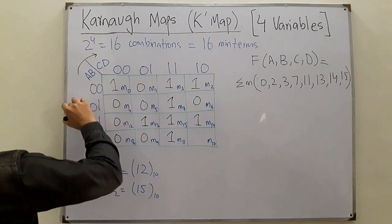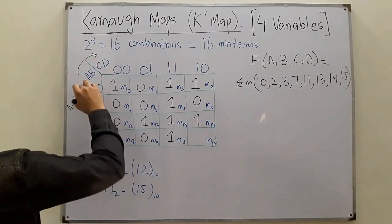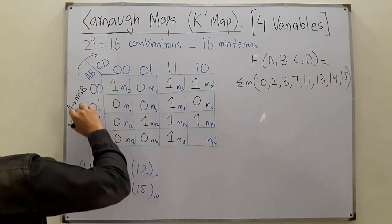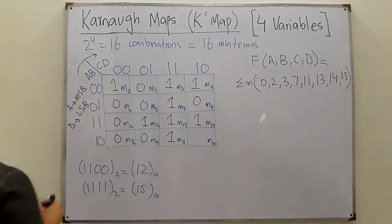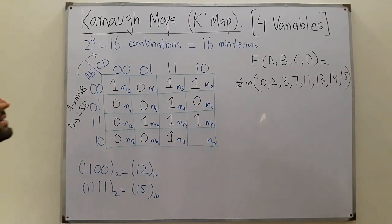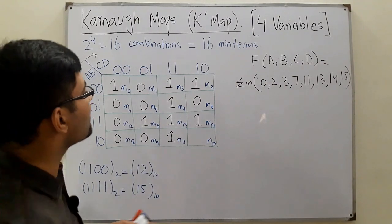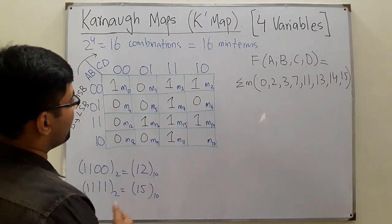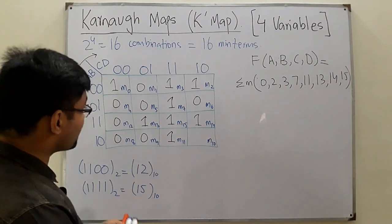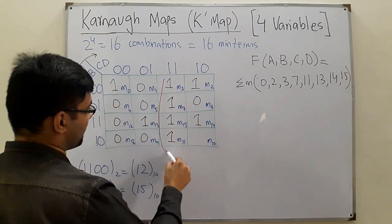Note: A is the most significant bit and D is the least significant bit. Now look for the largest possible groups. You can have a maximum of 16 ones; we don't have that. Check for eight ones — we don't have that either. Check for four ones — yes, we have a group of four ones. This is the first group.